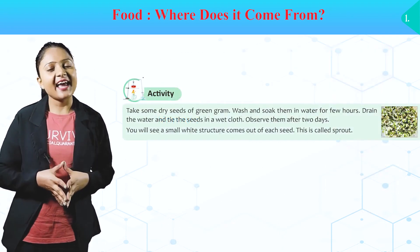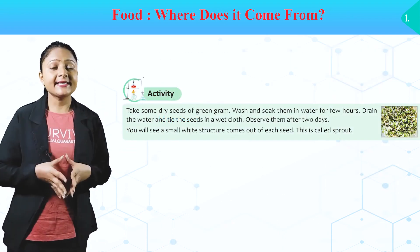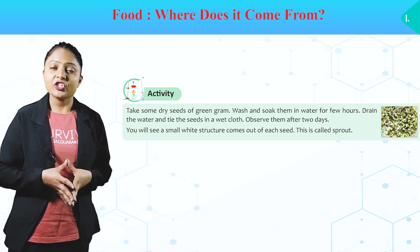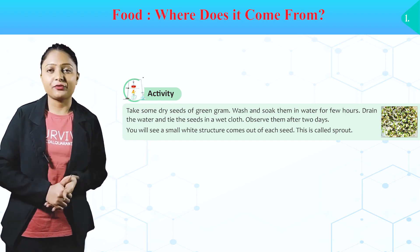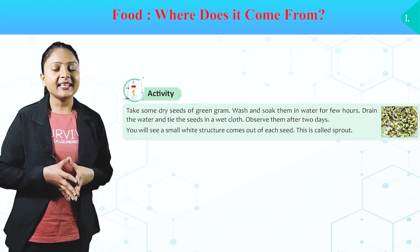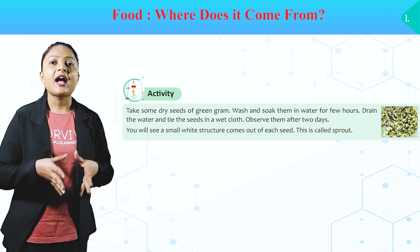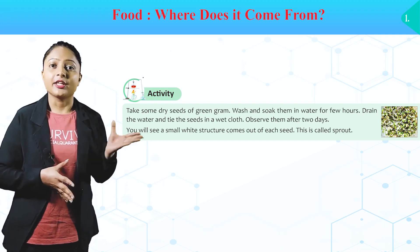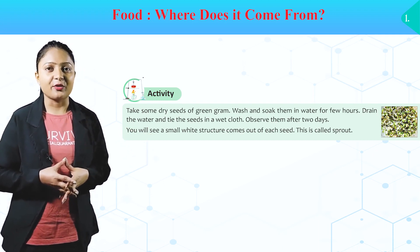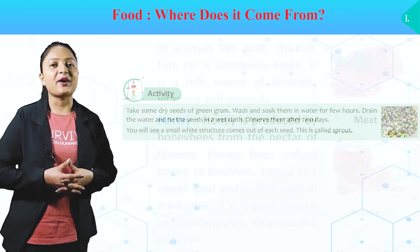Activity. Take some dry seeds of green gram, wash and soak them in water for a few hours. Drain the water and tie the seeds in a wet cloth. Observe them after two days. You will see a small white structure comes out of each seed. This is called a sprout.